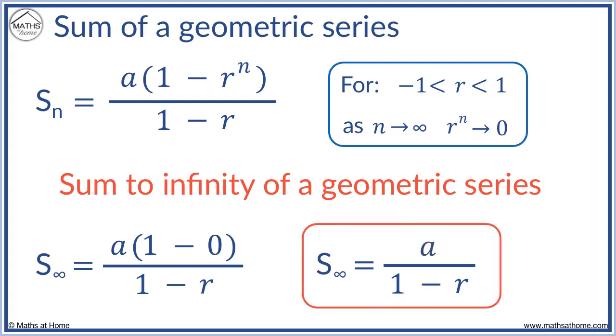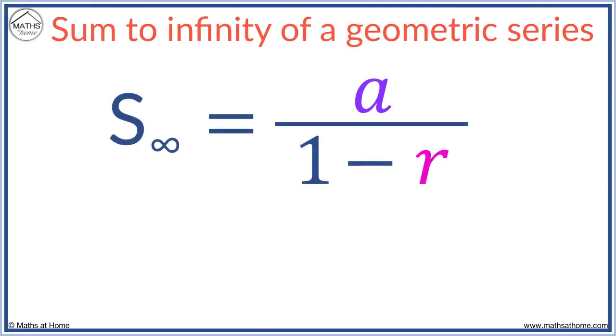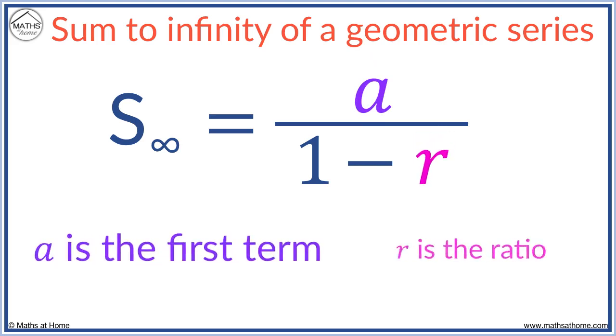Therefore, the sum to infinity is found with a over 1 minus r, where a is the first term of the series and r is the ratio.